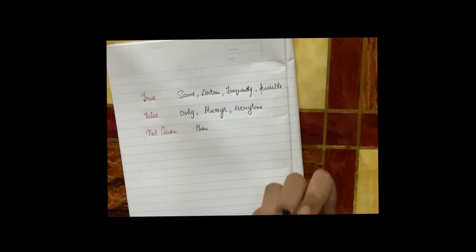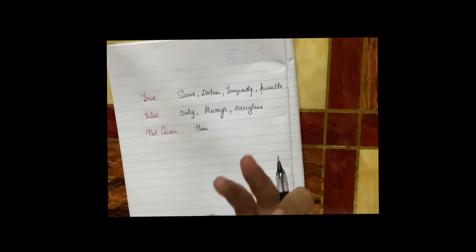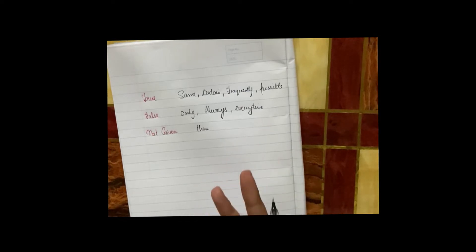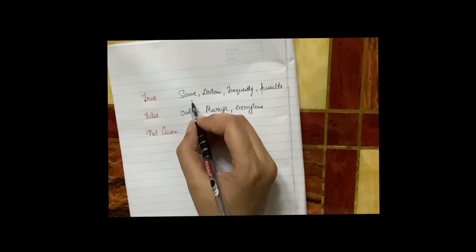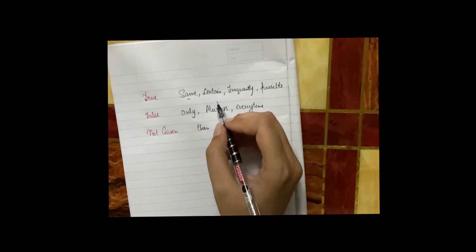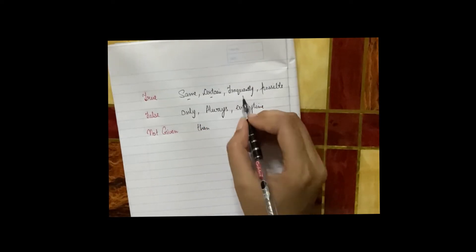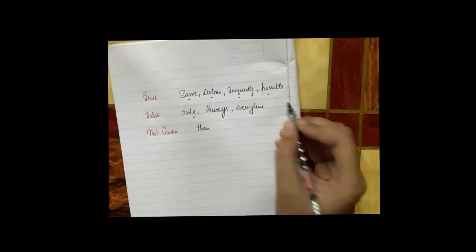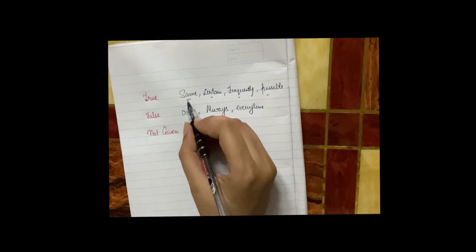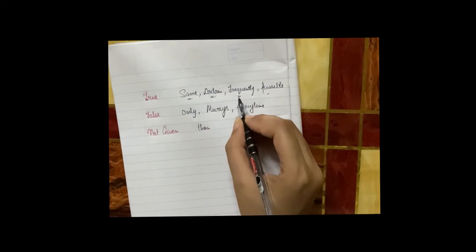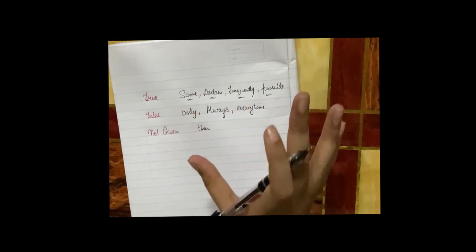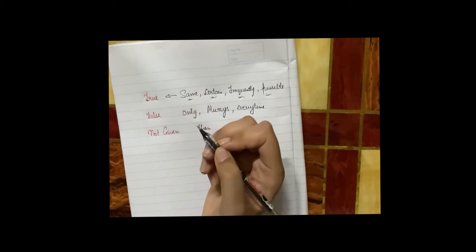First of all, we will see that if these words come, 99% of the time the answer will be true. First one is 'same', then 'certain', 'frequently', and 'possible'. These are four words: same, certain, frequently, and possible. If they are appearing in your sentence, then your answer is true.